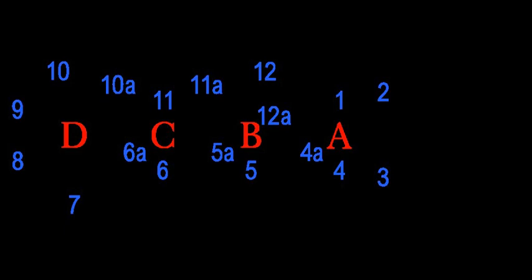While all tetracyclines have a common structure, they differ from each other by the presence of chloride, methyl, and hydroxyl groups. These modifications do not change their broad antibacterial activity.